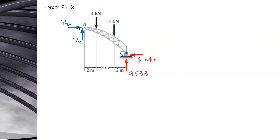If complicated, you can assume tension with respect to the cutting section. By inspection in this case, since we can tell the direction, assume compression instead to avoid negative signs.